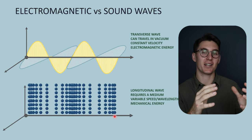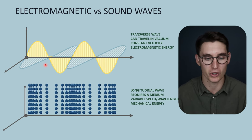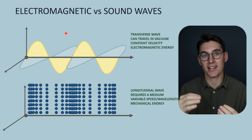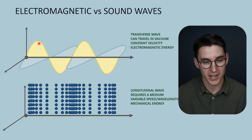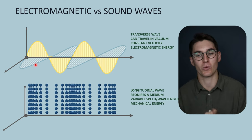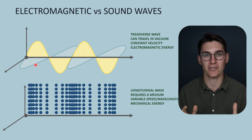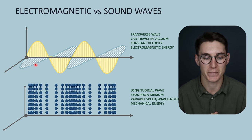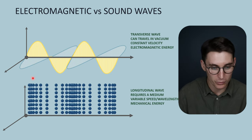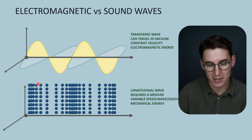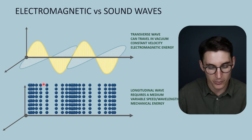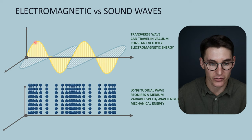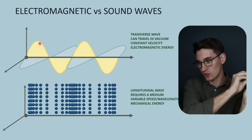We can represent electromagnetic and sound waves graphically. An electromagnetic wave is a transverse wave — orthogonal oscillating fields that self-propagate through space without needing a medium, traveling at a constant velocity regardless of frequency or wavelength. A sound wave, by contrast, is a longitudinal wave: the movement of the units within the medium occurs in the same direction as the movement of energy. These units oscillate parallel to the energy transfer, unlike in an electromagnetic wave where the oscillation is perpendicular to the direction of propagation.